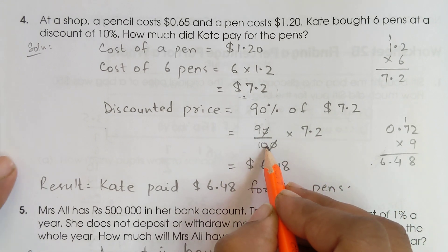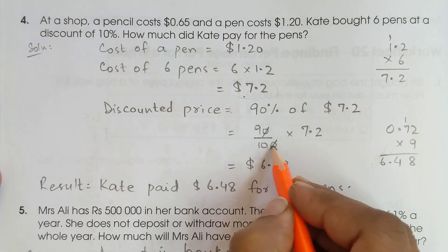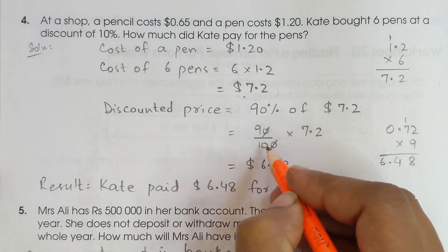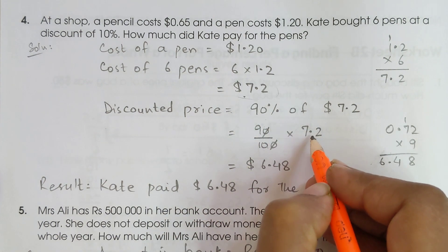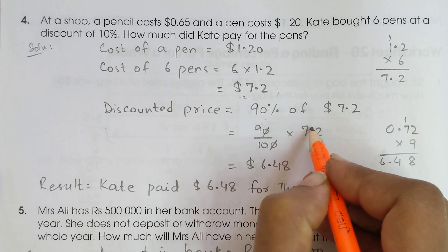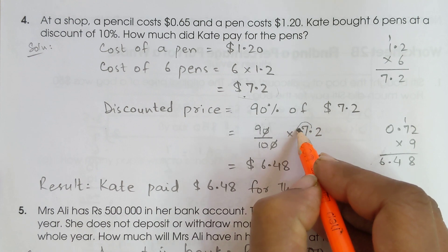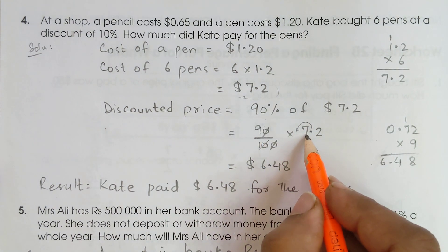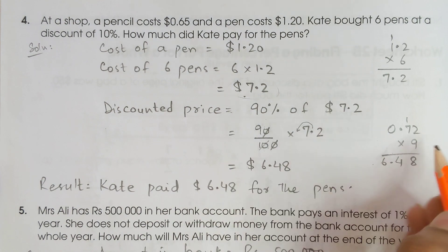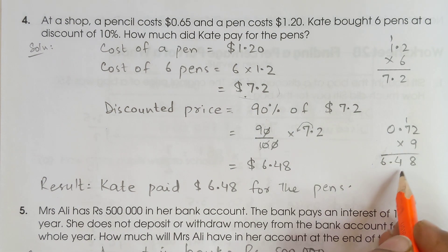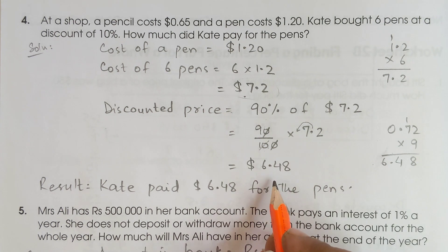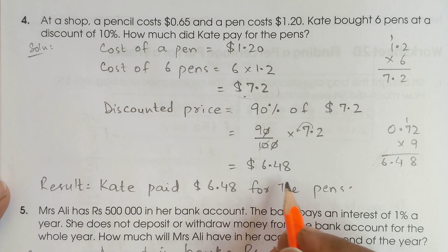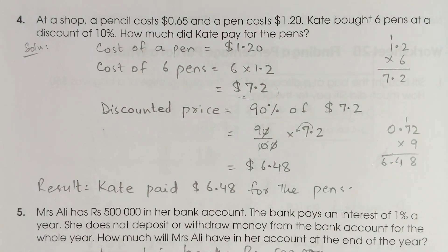After the 10% discount: 90 divided by 100, the zeros cancel, giving us 0.9. We multiply 0.9 by $7.20, which becomes 9 multiplied by $0.72. 0.72 multiplied by 9 gives $6.48. So Kate will pay $6.48 for the pens.